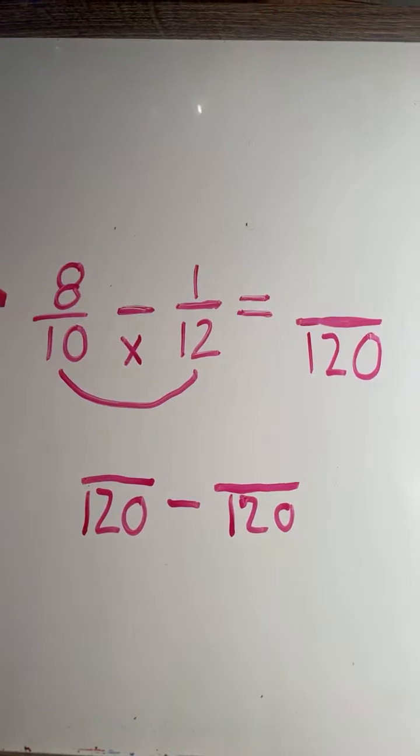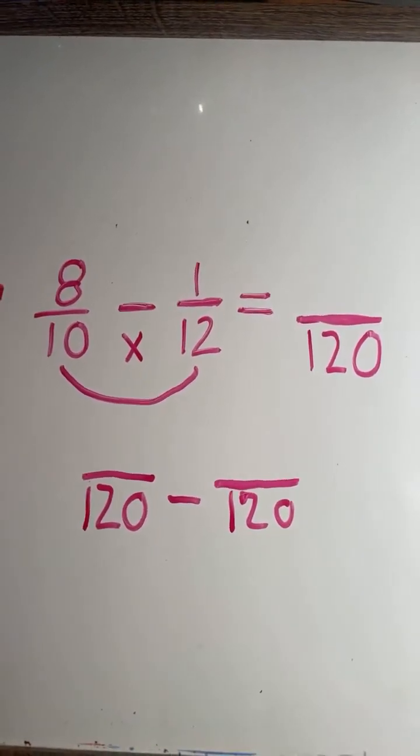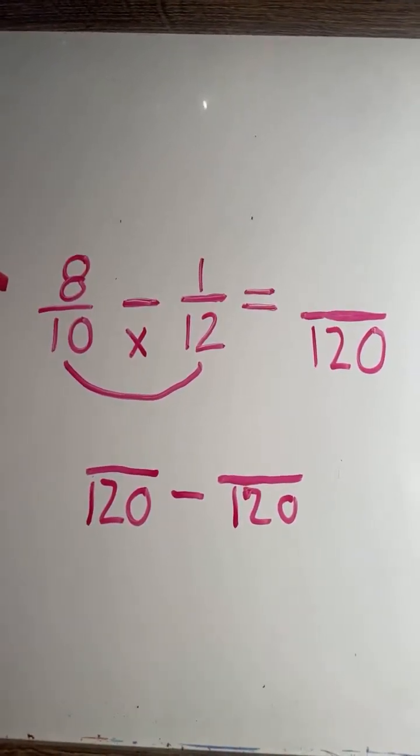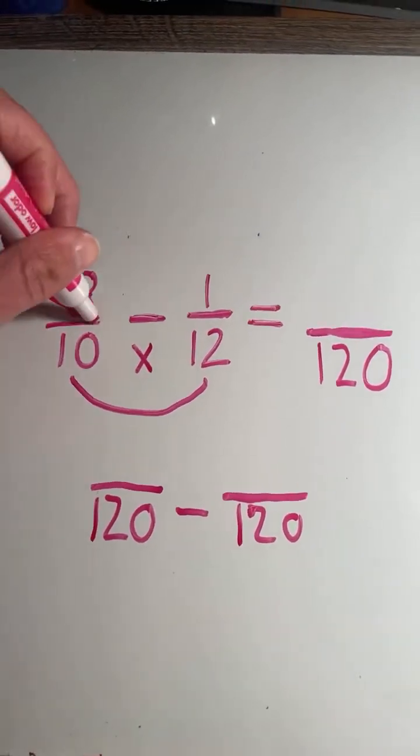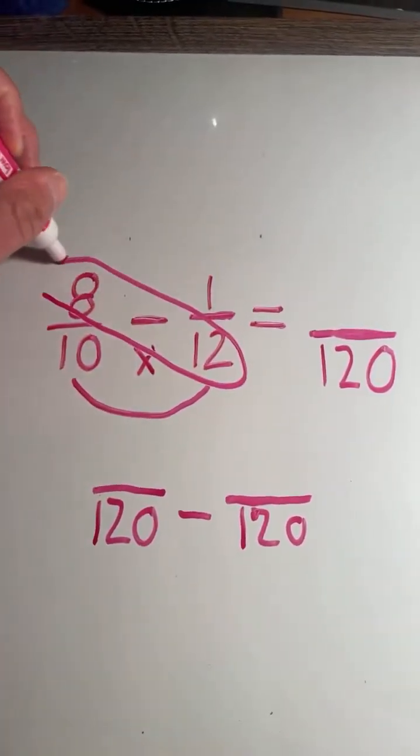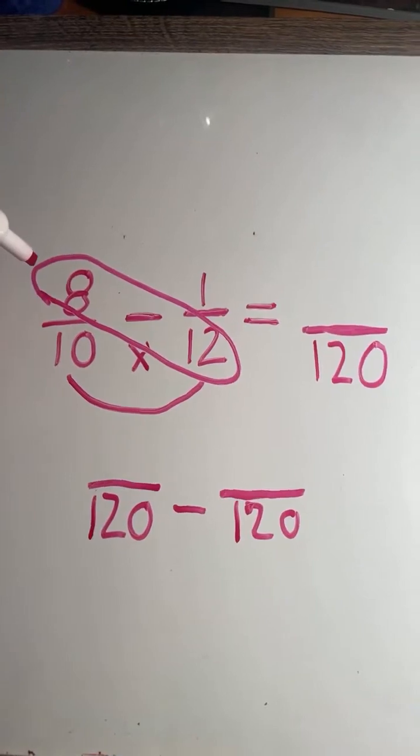Now to get our two numerators, to convert 8 tenths and 1 twelfth to 120ths, we have to cross multiply. We have to multiply each numerator by the opposite denominator.